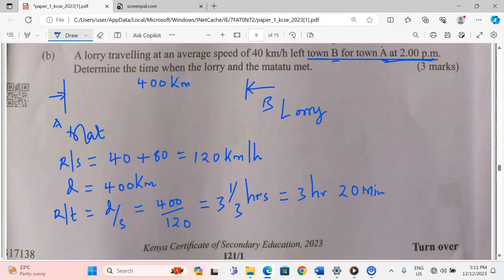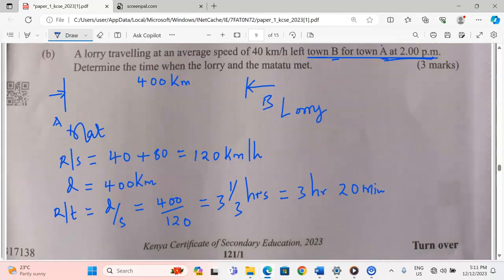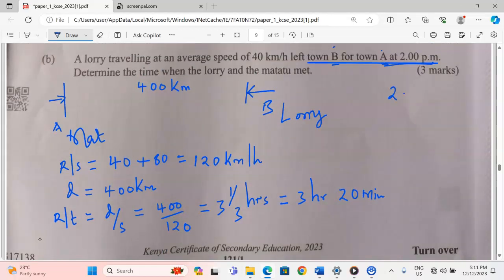Remember we are calculating the time when the lorry and the matatu met. For them to meet, we need to add the time they begin the journey, then the time they would take to narrow the relative distance between them. It's going to be 5:20 PM. Thank you.